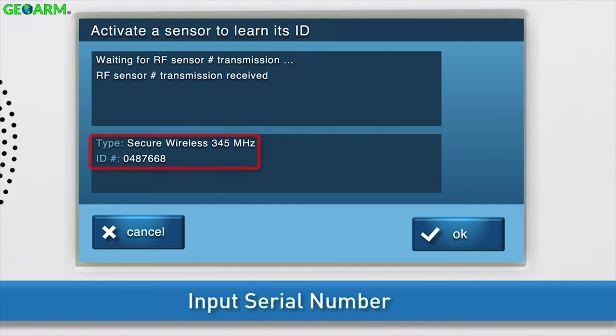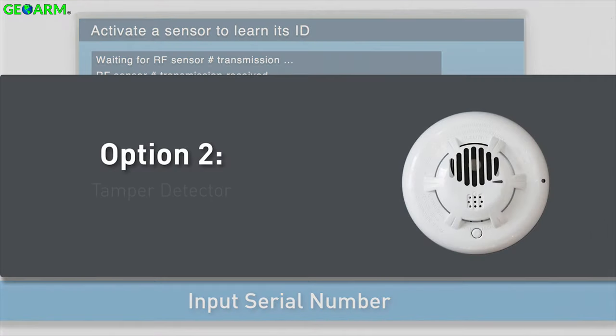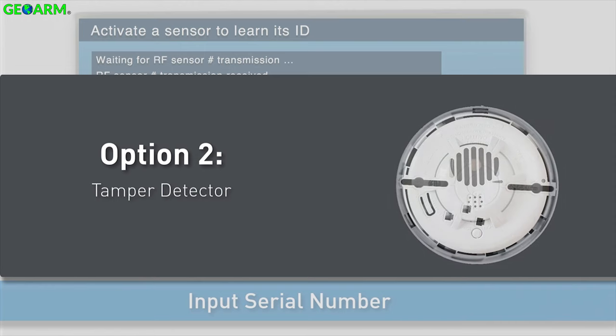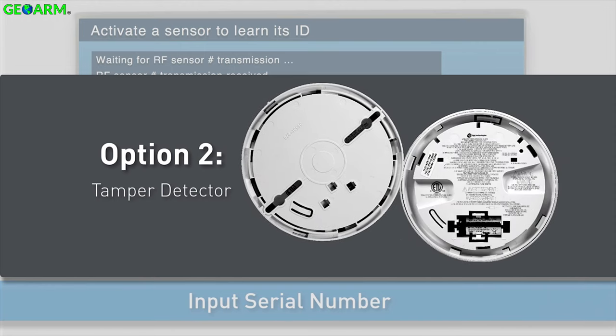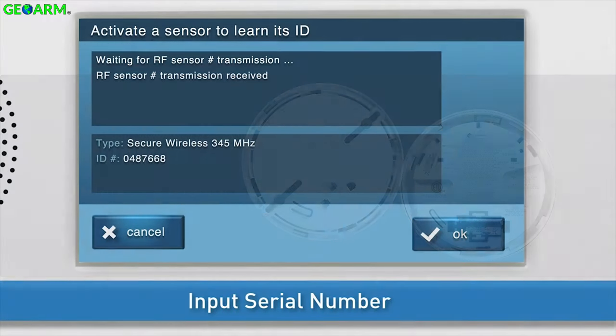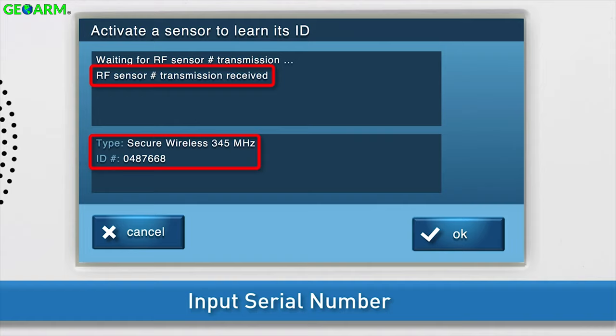This should take around 4 to 10 seconds. Your second option is to tamper the detector. Twist the detector counter-clockwise to remove the mounting base. You will see the confirmation message and ID number on screen.